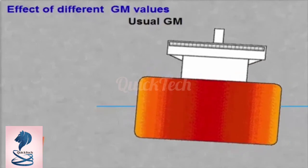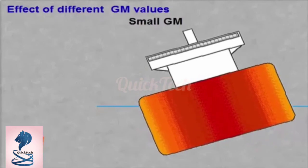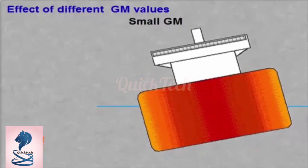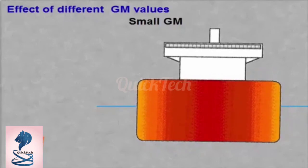A small GM will result in little strain on the cargo and equipment lashings and bulkheads. The rolling is very slow and the movement is very nice and even.